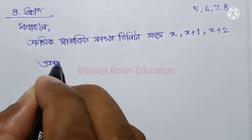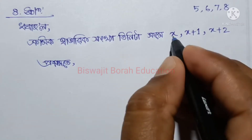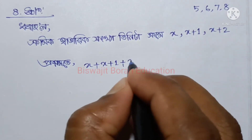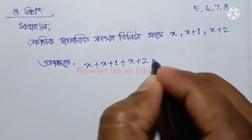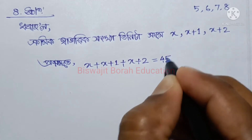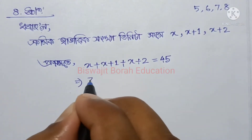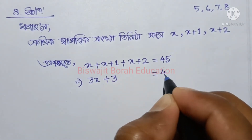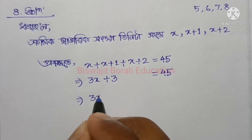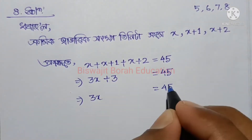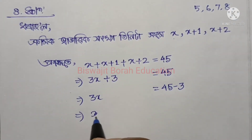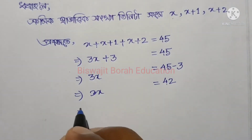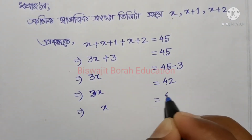પ્રશ્ન: x, x+1, x+2 — these are three consecutive numbers. Their sum: x plus (x+1) plus (x+2) equals 45. So 3x plus 3 equals 45.